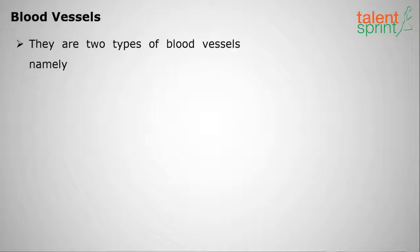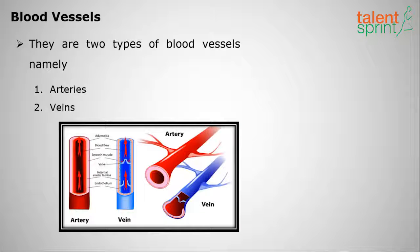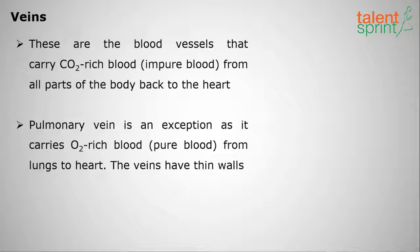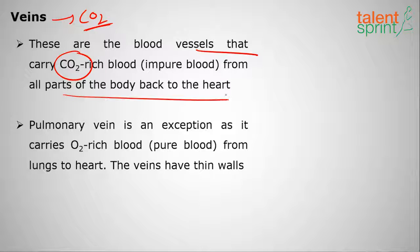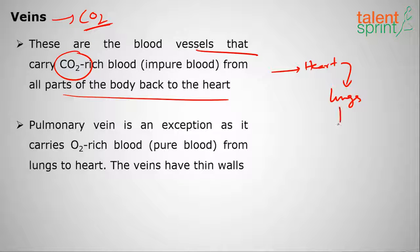Moving on to blood vessels: there are two types, arteries and veins. Veins are the blood vessels that carry CO2-rich blood from all body parts back to the heart. From the heart, it is pumped to the lungs, and from the lungs the CO2 is exhaled outside.